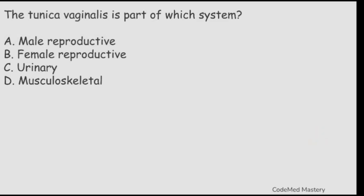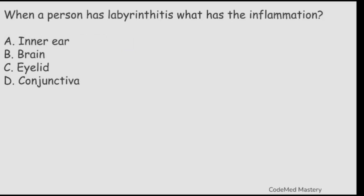Next question: the tunica vaginalis is part of which system? Option A: male reproductive. Option B: female reproductive. Option C: urinary. Option D: musculoskeletal. The right answer is option A, male reproductive system.